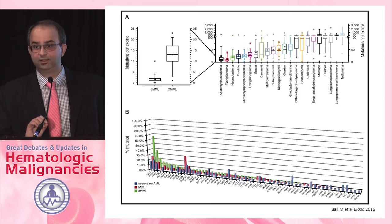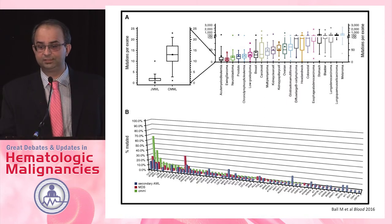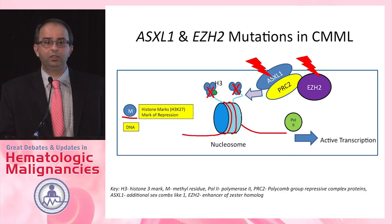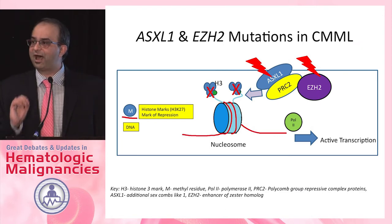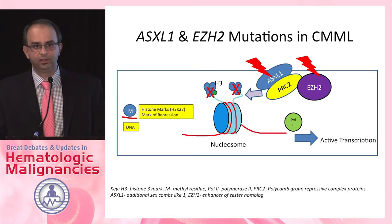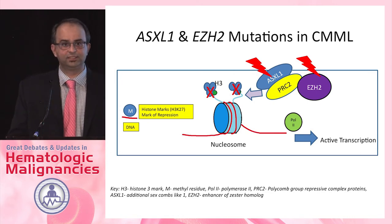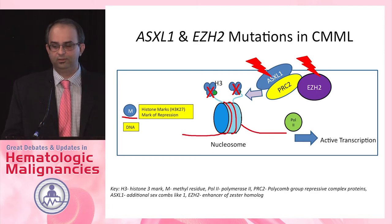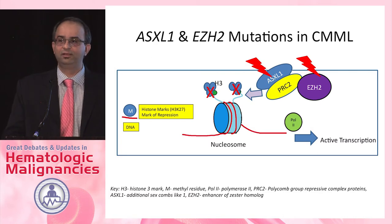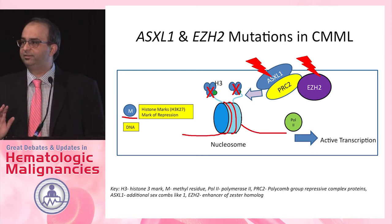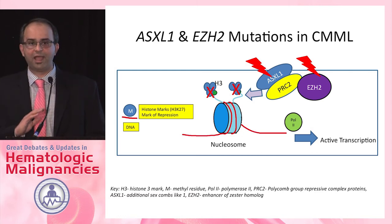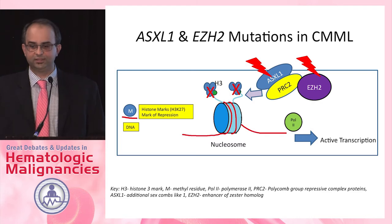Nine genes make up 99% of the mutations seen in CMML. But the only one clearly shown to adversely impact survival is ASXL1. ASXL1 is a truncating mutation that impacts the polycomb repressor complex and leads to unbridled activated transcription. Genes which should normally be suppressed by this particular histone mark are now activated, giving rise to oncogenesis.